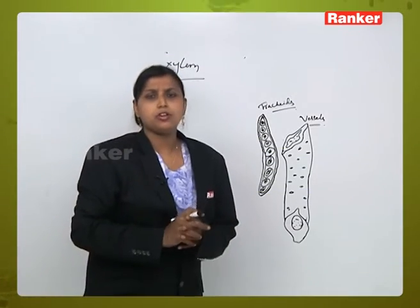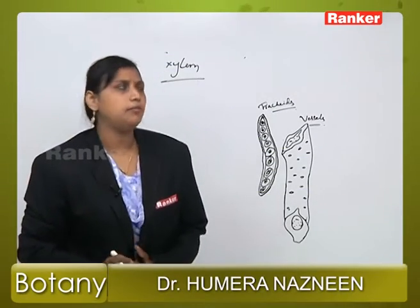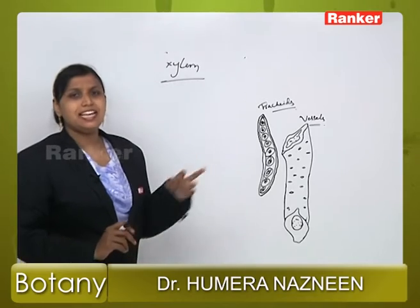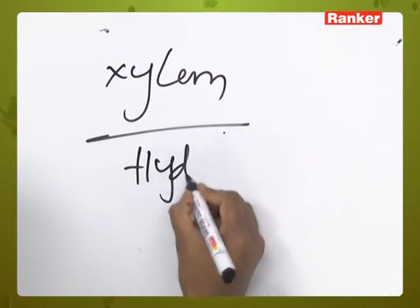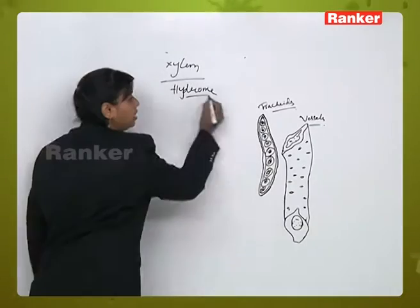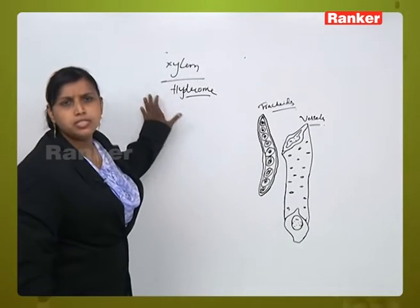The first and foremost complex tissue we have in our syllabus is xylem. Xylem is alternatively known as hydrome.